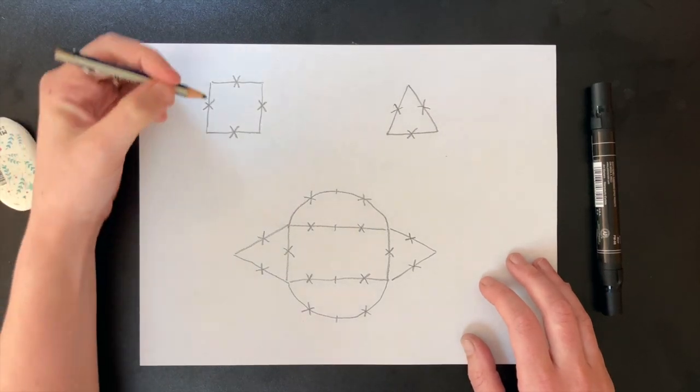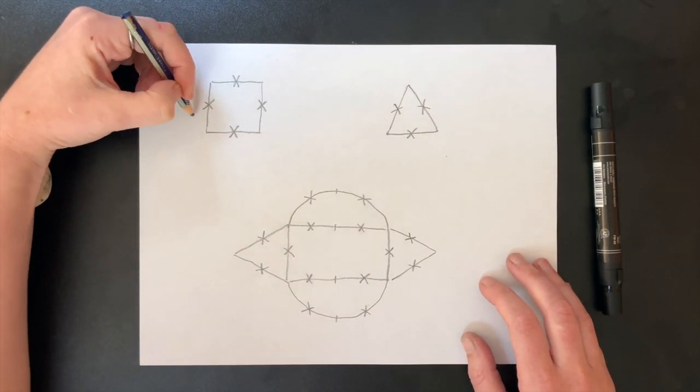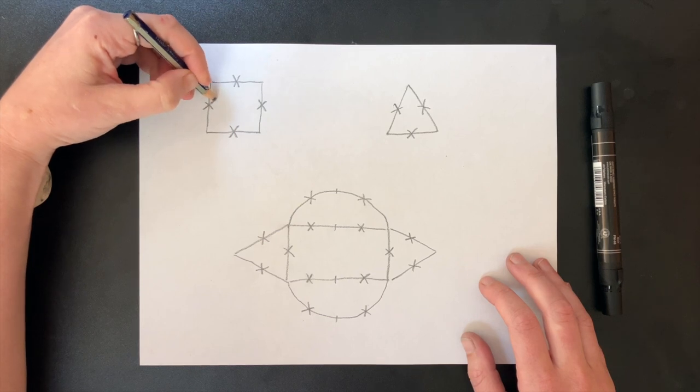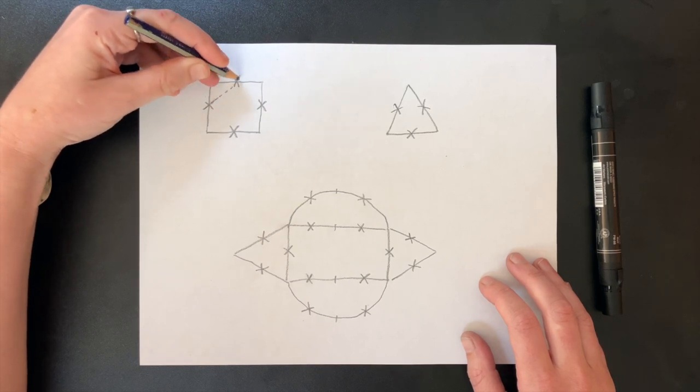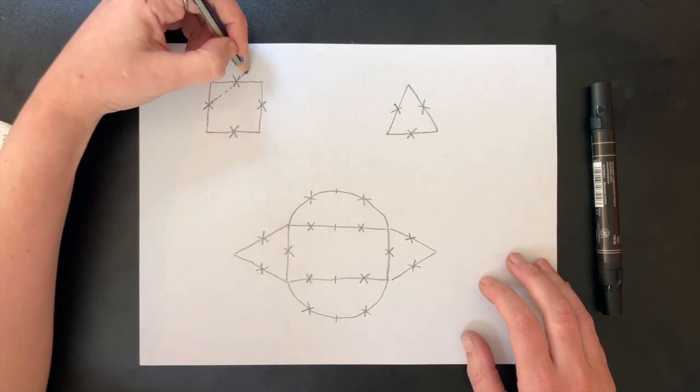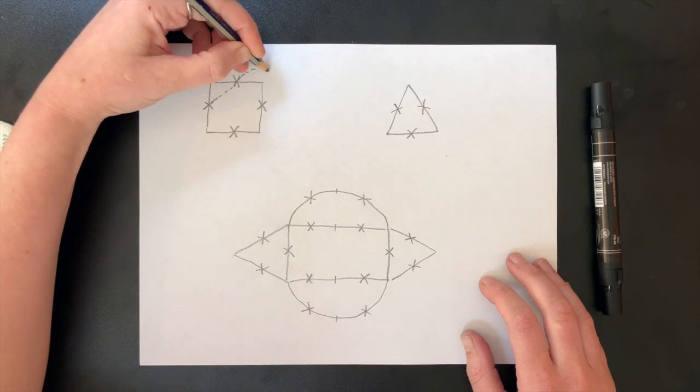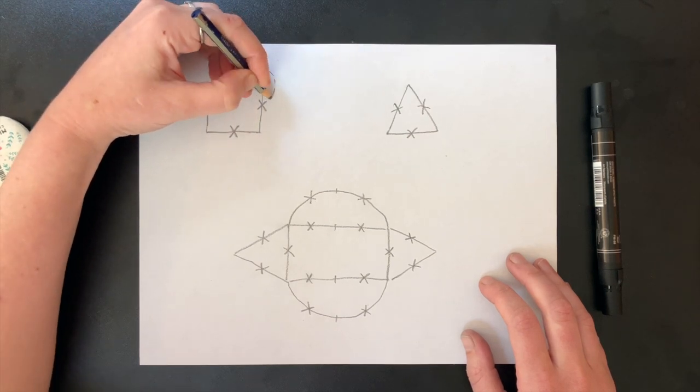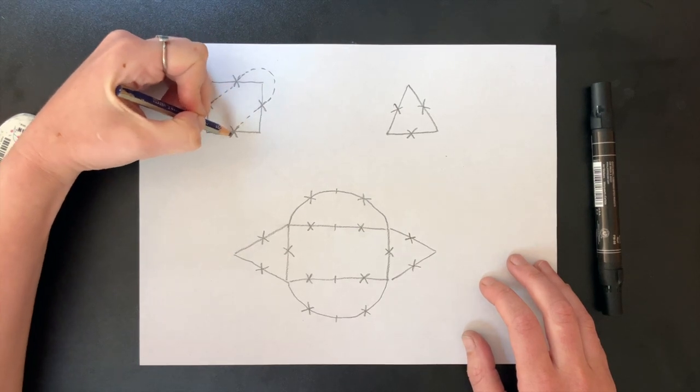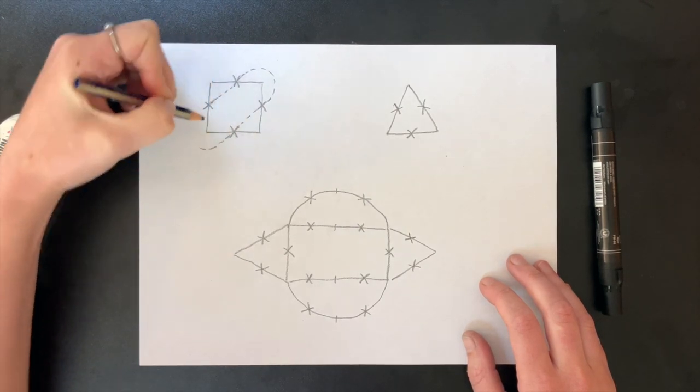So start at any X and follow the direction of one of the lines making it up until you hit another X and connect them. Or if you're heading outwards away from the shape, curve your line around the shape until you reach another X.